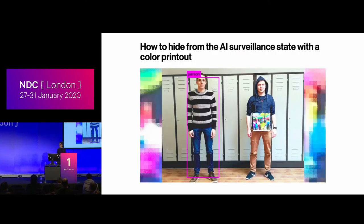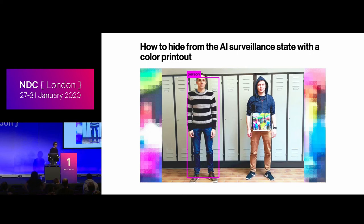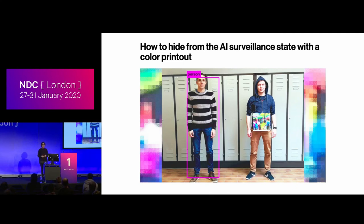You may have seen articles about methods to confuse deep learning surveillance systems — like printing a colorful pattern to wear around your neck so cameras don't see you. This is actually fairly hard because you usually need access to the specific algorithm. But you can see it's fairly easy to confuse a system by giving it something unexpected — maybe if we all wore animal masks surveillance systems wouldn't work. That's because these systems have no concept of the actual entities in an image.